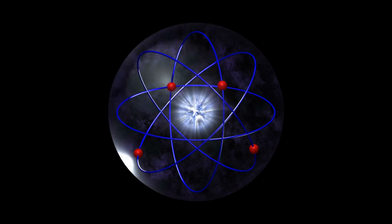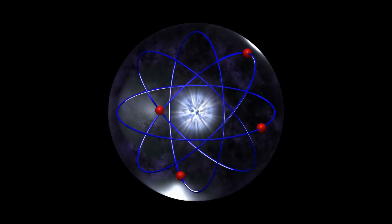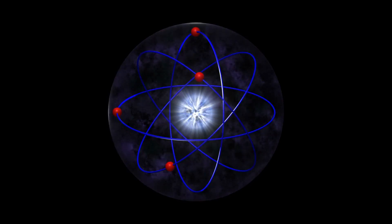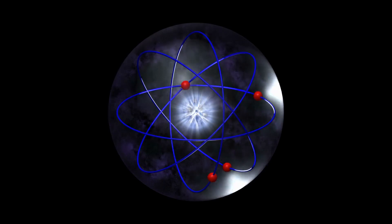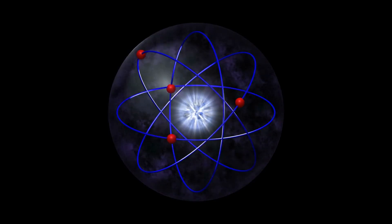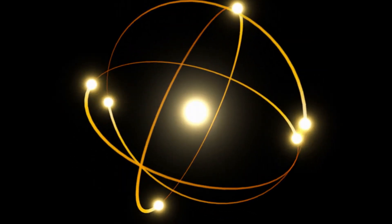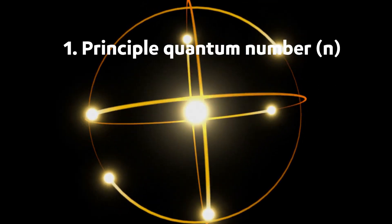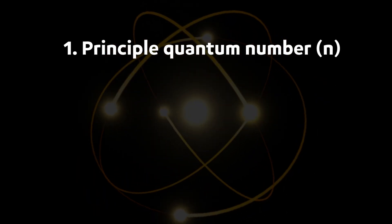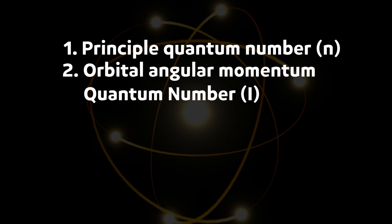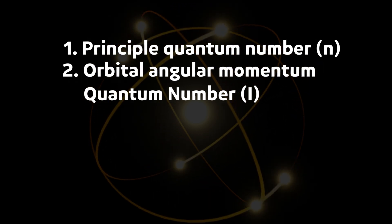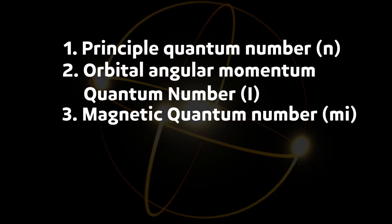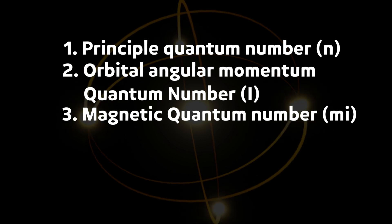In the same way, electrons have four levels of identifications - four quantum numbers. Every electron inside the atoms has unique four quantum coordinates. No two electrons share the same combination. These four quantum numbers are called: number one, principal quantum number n; number two, orbital angular momentum quantum number L; number three, magnetic quantum number mL;